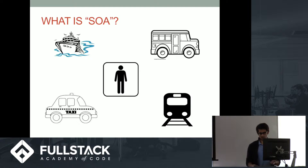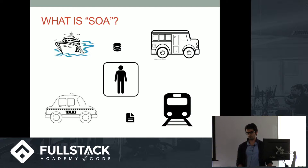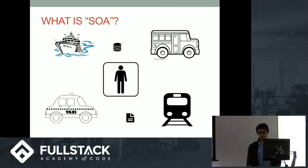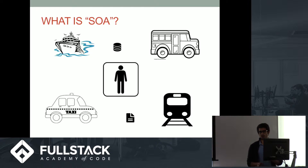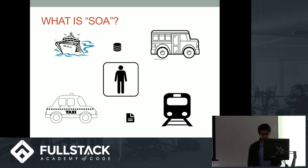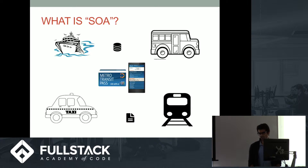If the ferry stores its data on a mainframe computer and the subway stores its information in files, I would have to call both departments, send a letter, send an email — it would take a really long time. I'd have to keep track of which department uses different formats, which would get really complicated. What if there was one place I could go and just update everything? That would be a transit pass.